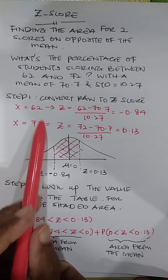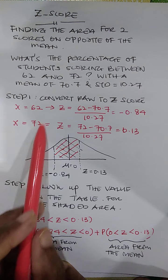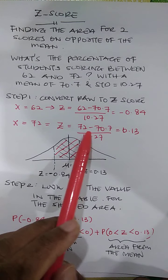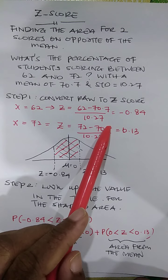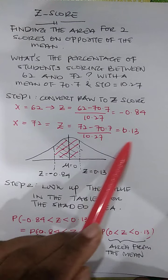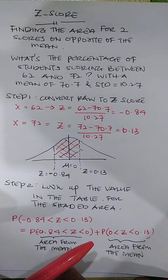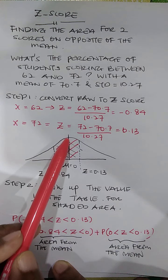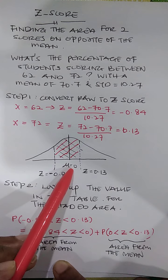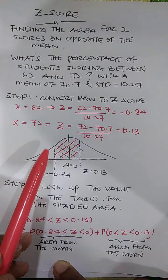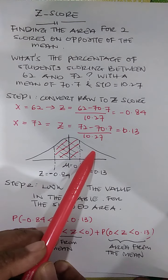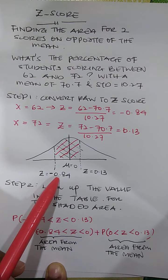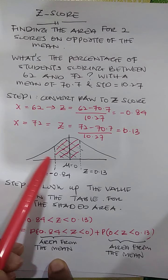So this negative is trying to indicate that this raw score is below the mean. For the second raw score is 72 and then I convert it to Z score. 72 minus 70.7 divided by 10.27, I get 0.13. So the area under the curve, middle line is the mean. There is a score below the mean and there is a score above the mean. For the below one is negative 0.84, for the above is 0.13.